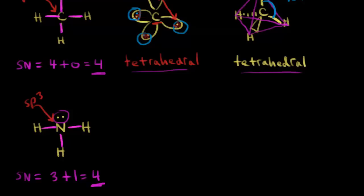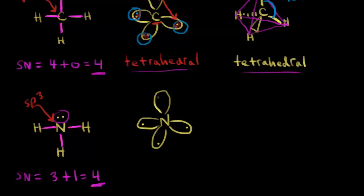Let's draw those four hybrid orbitals for nitrogen: one, two, three, and four. When drawing the dot structure for nitrogen, you would have one electron, another electron, another electron, and then two in the fourth orbital. Then put in the hydrogens — each hydrogen has one electron in an unhybridized s orbital. The overlap of orbitals forms a sigma bond here, a sigma bond here, and a sigma bond here — so three sigma bonds in ammonia.